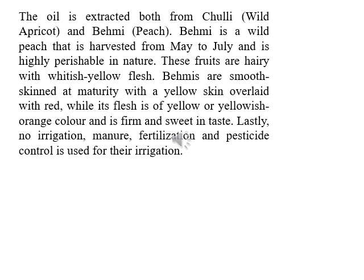Chullu oil is extracted both from Chullu (wild apricot) and Bemi (peach). Bemi is a wild peach harvested from May to July and is highly perishable in nature. These fruits are hairy with white-yellow flesh. Bemi are smooth-skinned at maturity with a yellow skin overlaid with red or white, while its flesh is yellow or yellowish-orange in color and is firm and sweet in taste. Notably, no irrigation, manure, fertilization, or pesticide control is used for their cultivation.